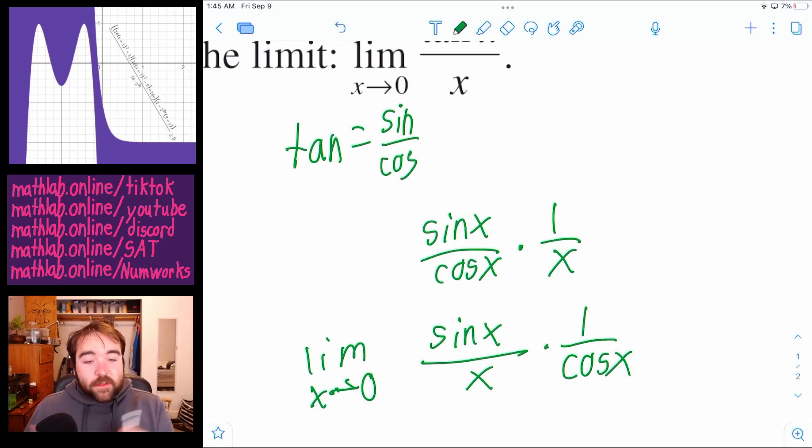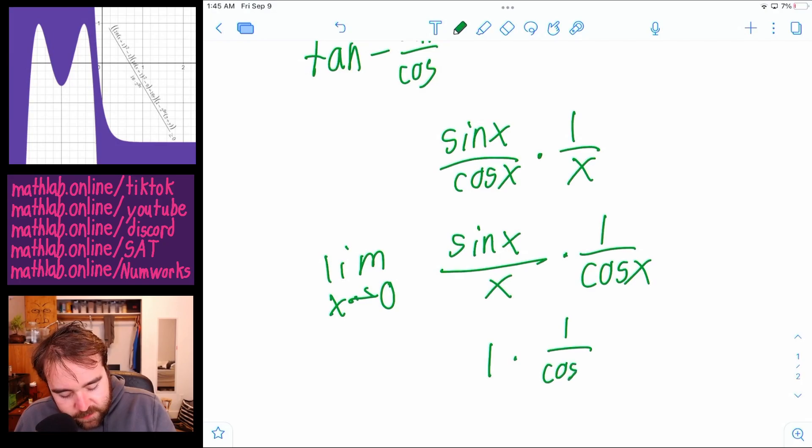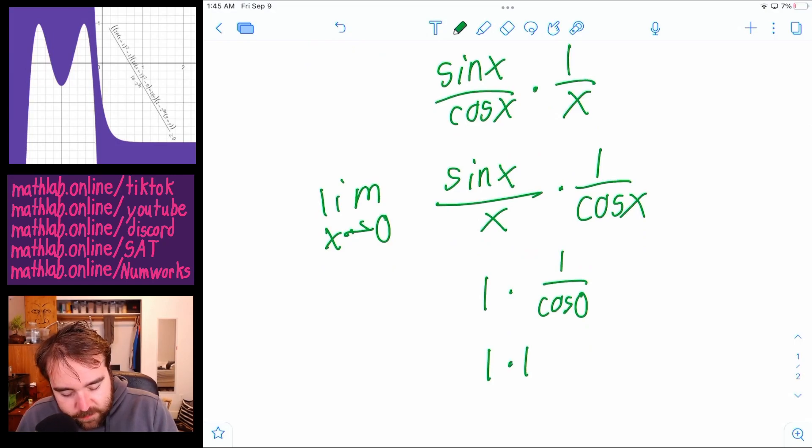And then now there's limits that we know, because look, the sine of x over x, we know that that limit is just one. And then we can plug in zero to the other one. So times one over the cosine of zero, the cosine of zero is one. So that's one times one. So the answer is one.